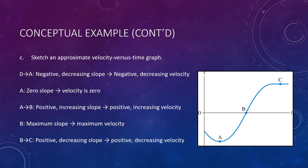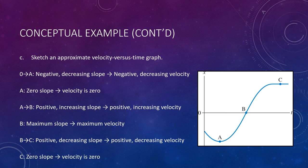From B to C, we still have a positive slope — still pointing up and to the right — but it is decreasing from the maximum steepness back to zero at C. So our velocity should be positive but decreasing back to zero, because at C we have zero slope or zero velocity.